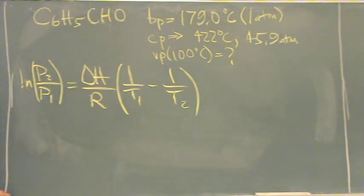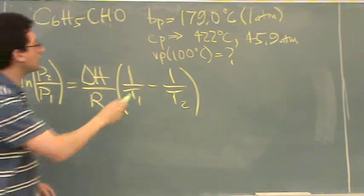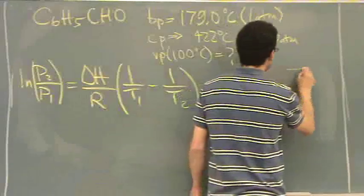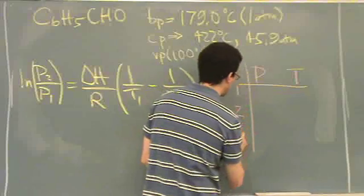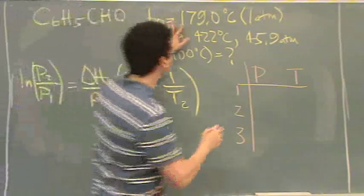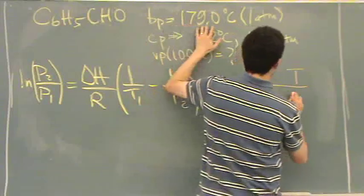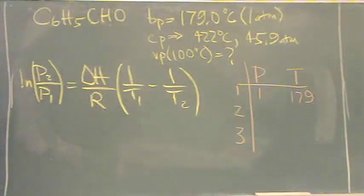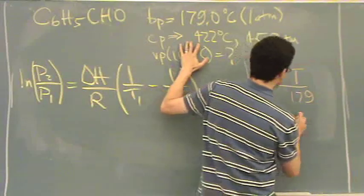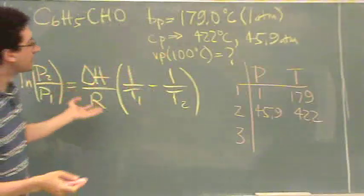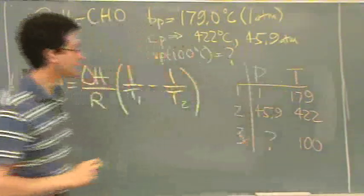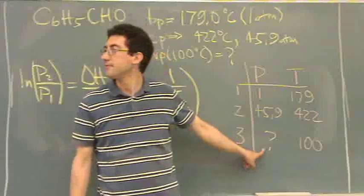So here's the problem. This is going to be a slightly more involved one for a couple reasons. So we want the final vapor pressure here. Maybe I'll make a little table. P, T. We actually are given three points, which is the confusing thing here. We have the boiling point information. That's one atmosphere and 179°C. We have the critical point, which is at 45.9 and 422, and the vapor pressure at 100. We don't know that pressure, so we really want to know this.